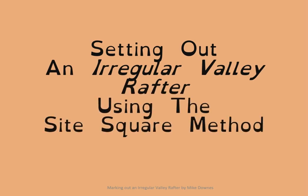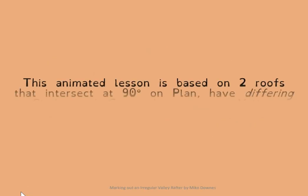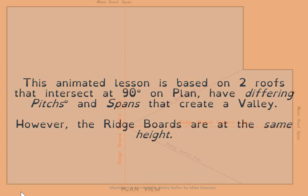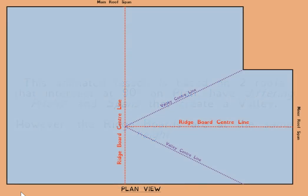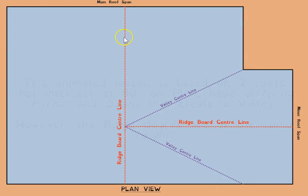This video is based on an irregular valley rafter — basically one that's not 45 degrees on plan. In this example, you have two roof surfaces creating a valley. As you can see in the plan view, the line of the valley is not 45 degrees because a smaller span is intersecting with a larger half span, and the two roofs are coming in at 90 degrees to each other.